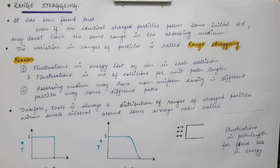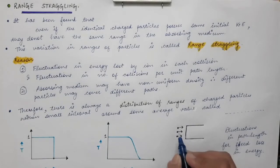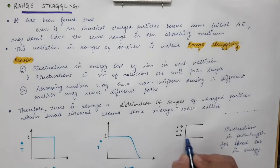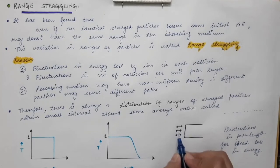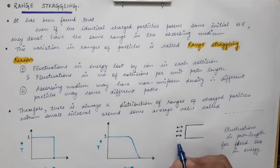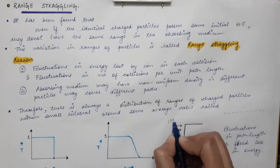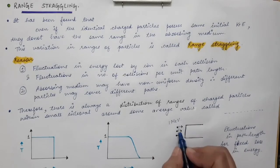In this lecture we are going to discuss range straggling and energy straggling. If we have identical particles traveling in a medium, let's say all these particles have the same amount of energy — for example, one mega electron volt of energy.